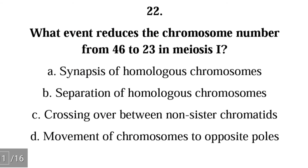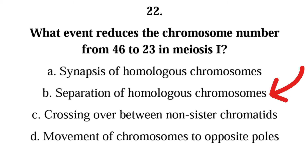Question 22: What event reduces the chromosome number from 46 to 23 in meiosis 1? A. synapsis of homologous chromosomes, B. separation of homologous chromosomes, C. crossing over between non-sister chromatids, D. movement of chromosomes to opposite poles. The correct answer is B, separation of homologous chromosomes. During meiosis 1, homologous chromosomes separate to different cells, reducing the chromosome number from 46 to 23 in each cell.